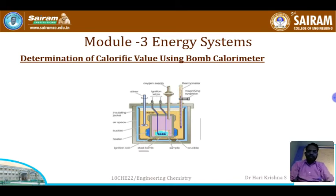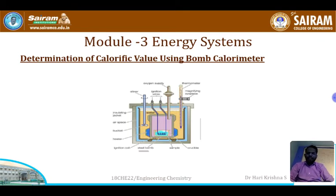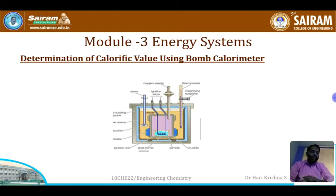The bomb calorimeter consists of a platinum crucible placed in the center, in which we take a known weight of a fuel sample. The crucible may be platinum or ceramic, because these materials will not react with the fuel — platinum is inert, and ceramic also does not react with any type of fuel.